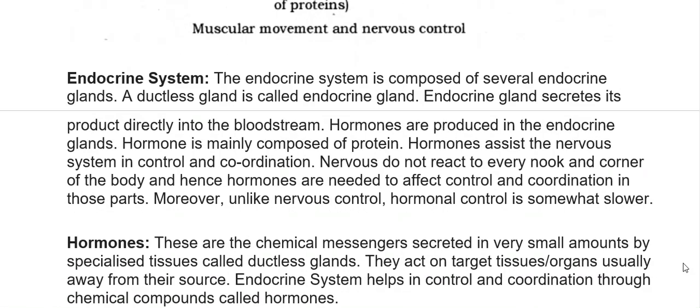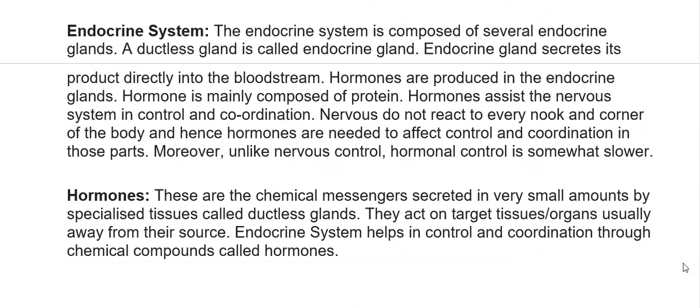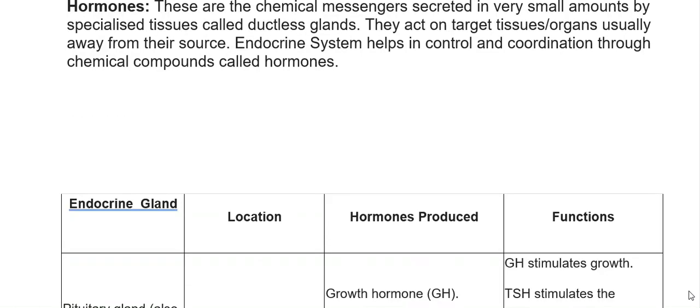The endocrine system is composed of several endocrine glands. A ductless gland, called an endocrine gland, secretes its product directly into the bloodstream. Hormones are produced in endocrine glands and are mainly composed of protein. Hormones assist the nervous system in control and coordination, as nerves do not reach every part of the body. Unlike nervous control, hormonal control is somewhat slower. Hormones are chemical messengers secreted in very small amounts by specialized ductless glands, and they act on target tissues or organs usually away from their source.